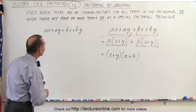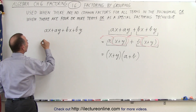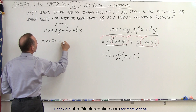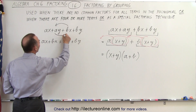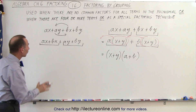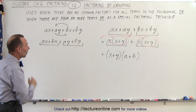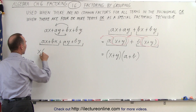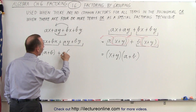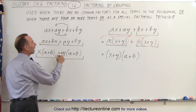Now notice what we could have done instead — we could have grouped the terms differently: the first and third terms together and the second and fourth terms together. We rewrite it as ax + bx, moving bx over, and then ay + by, moving ay. Grouping the first two terms and the next two terms, the first group has x in common and the second group has y in common. So we factor out x from the first two terms and y from the last two, giving us x(a + b) plus y(a + b).